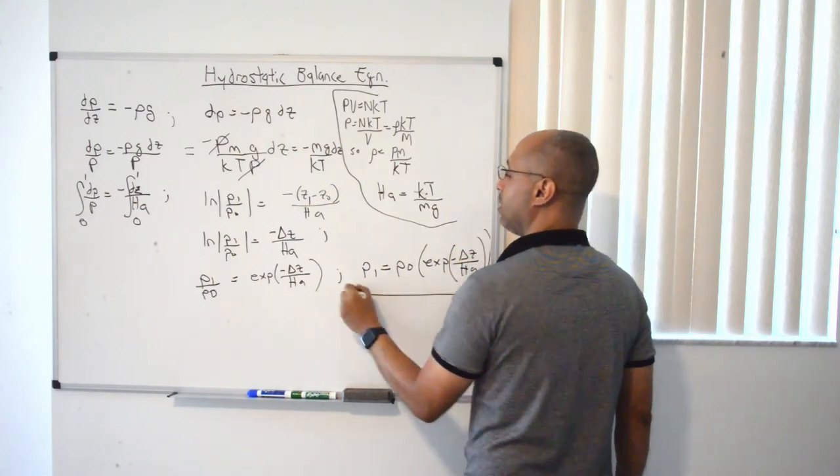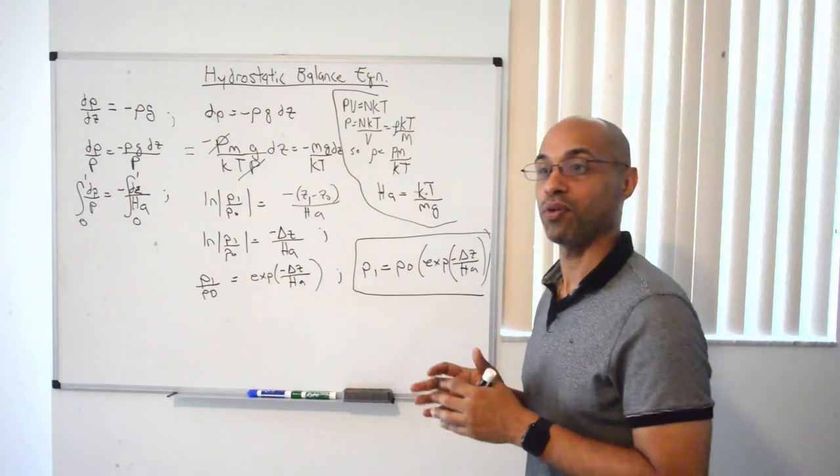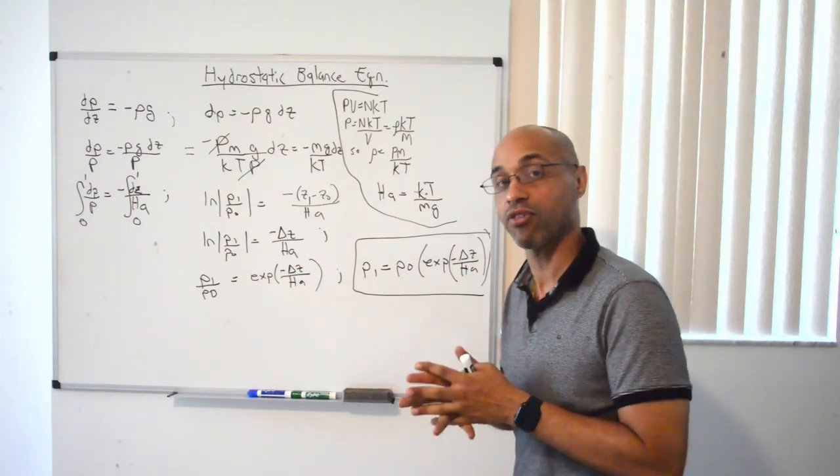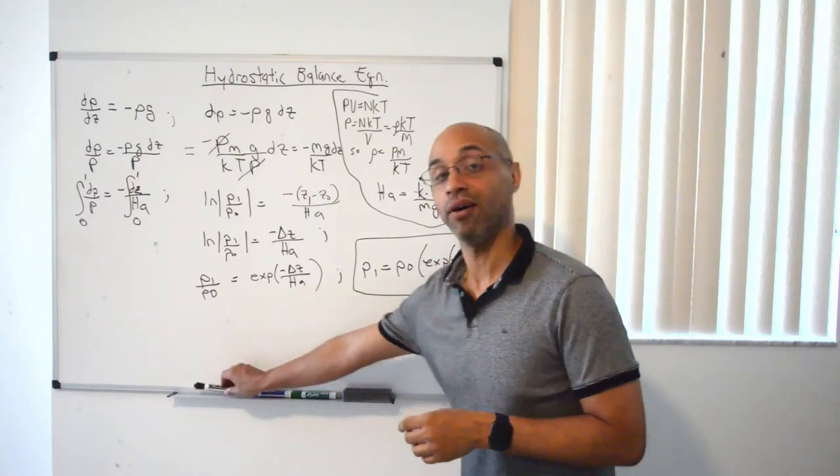So this is the pressure scale height equation, which basically says that pressure decreases in an exponential fashion. But there's a weird exception about this equation that we're going to talk about in the next video.